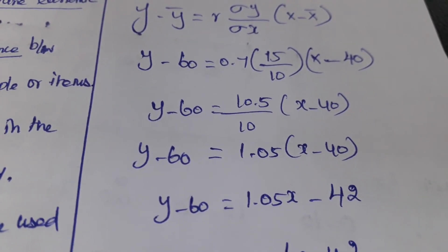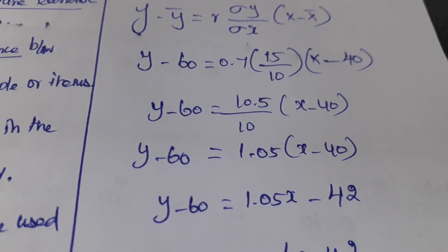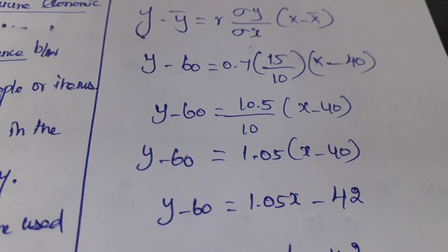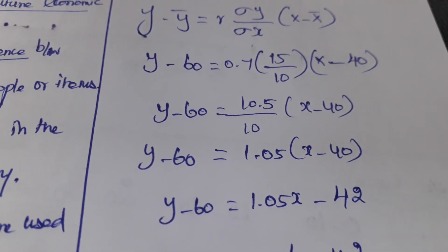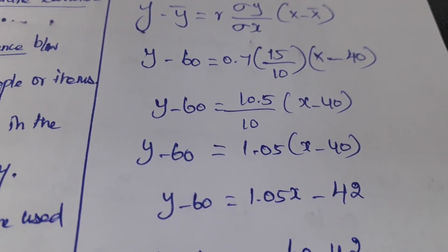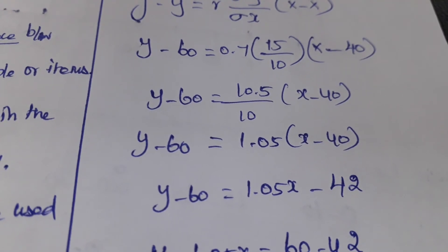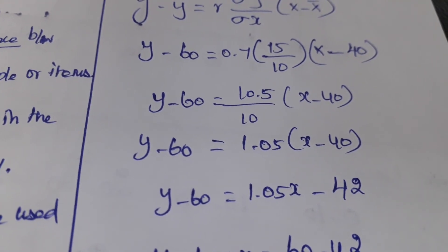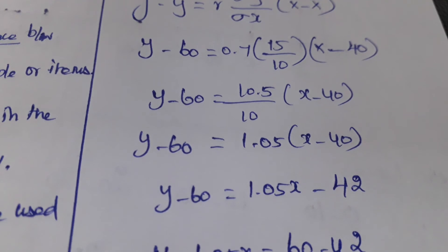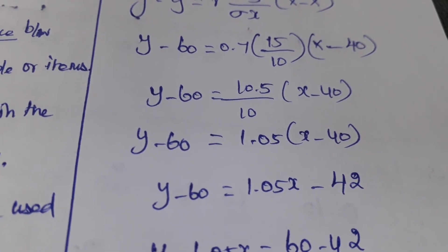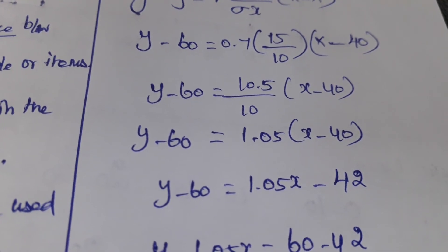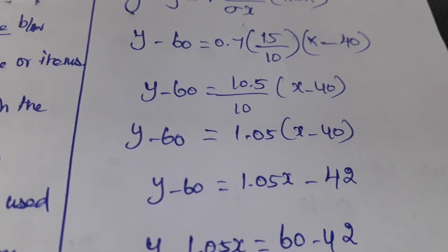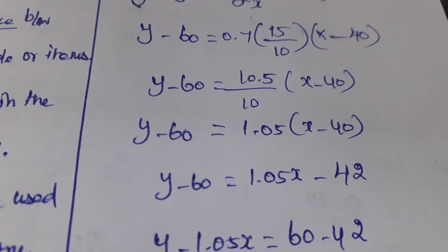We need to simplify further. Y minus 60 equals, if we divide 10.5 by 10 we get 1.05, into X minus 40. Then we need to multiply 1.05 with X minus 40: 1.05 times X is 1.05X, and 1.05 times 40 is 42, with a minus sign.